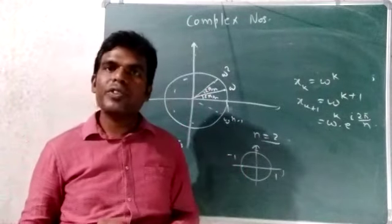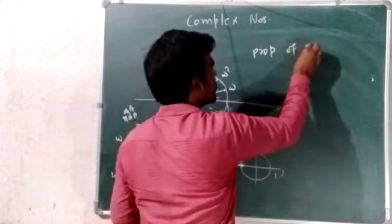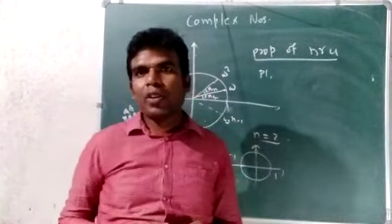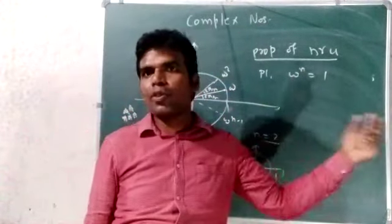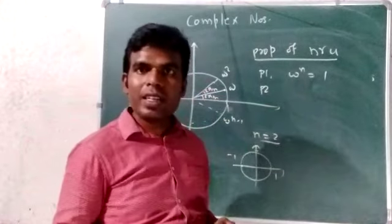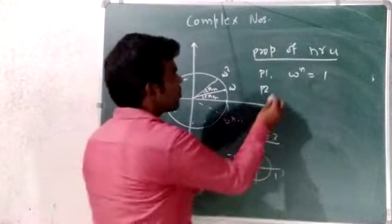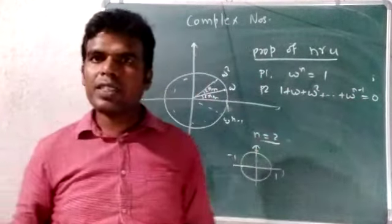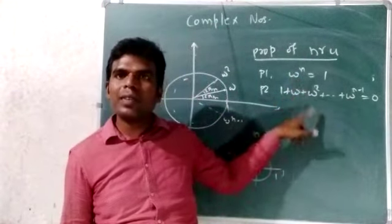Now the properties of nth roots of unity. The first property: if any of the nth roots of unity is raised to n, you will get 1. So omega raised to n equals 1. The second property: 1 plus omega plus omega squared plus ... plus omega raised to n−1 equals 0. You can derive this from the GP sum formula: omega raised to n equals 1, so the sum from 0 equals 0.